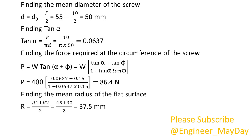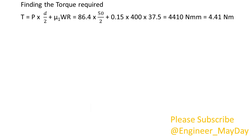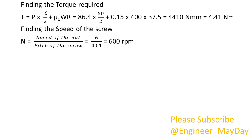Finding the mean radius of the flat surface: R equals 37.5 millimeters. Finding the torque required: T equals 4.41 newton meters. Finding the speed of the screw: N equals 600 RPM.